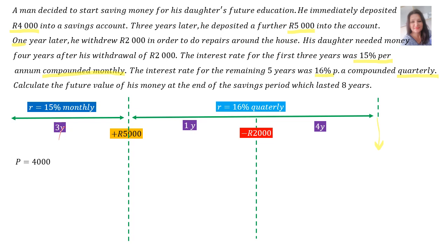Calculate the future value of his money at the end of the savings period, which lasted eight years. My advice to you is just add all your years: three, plus one, plus four is eight years. It adds up to eight years.